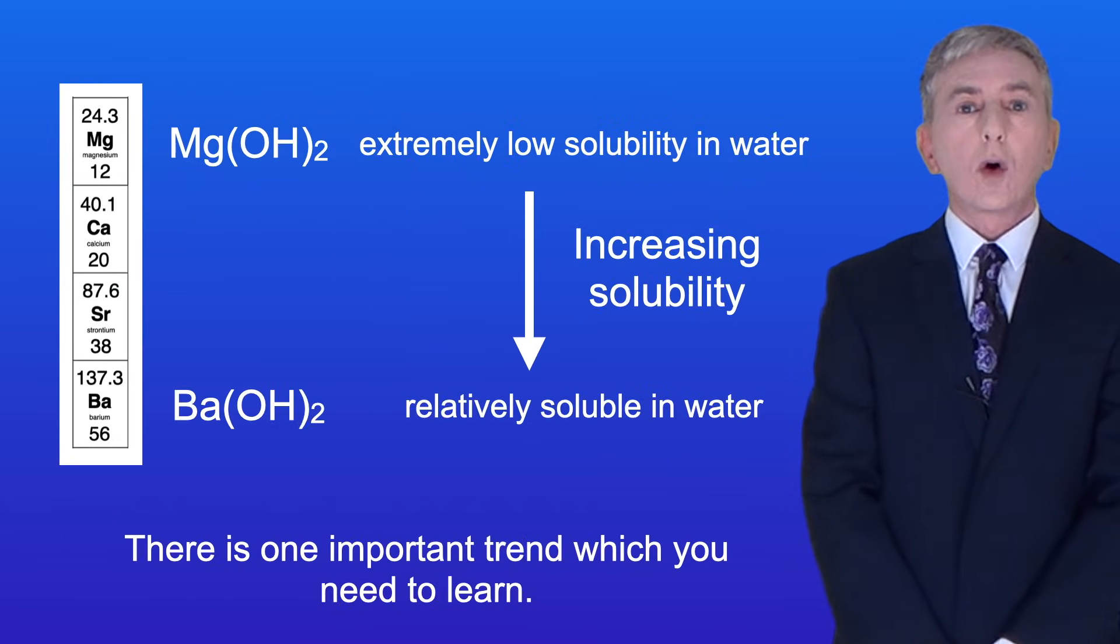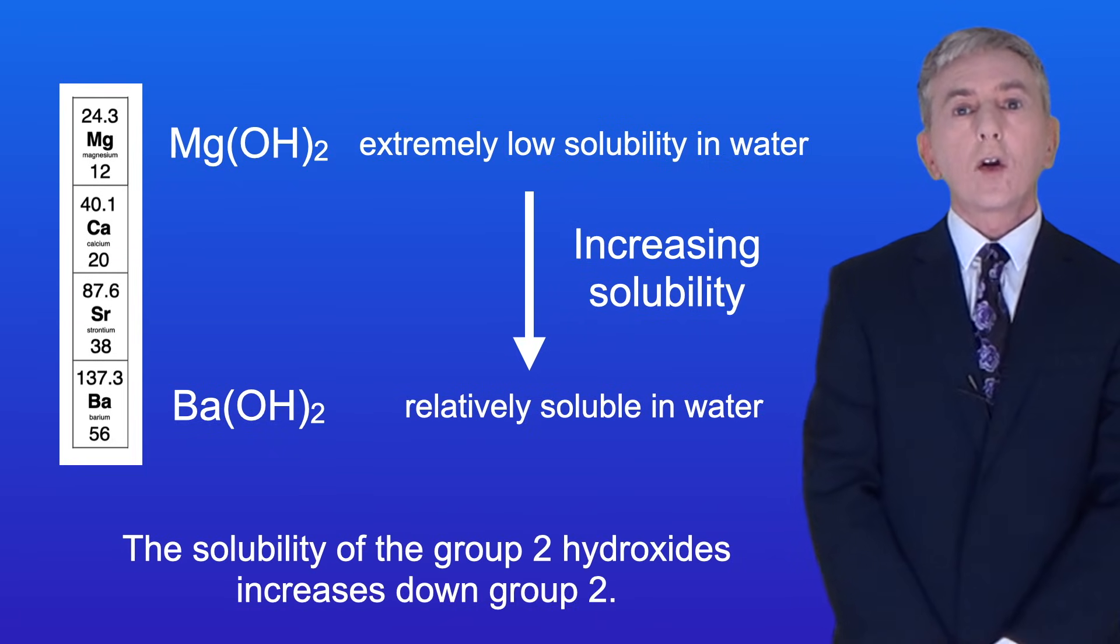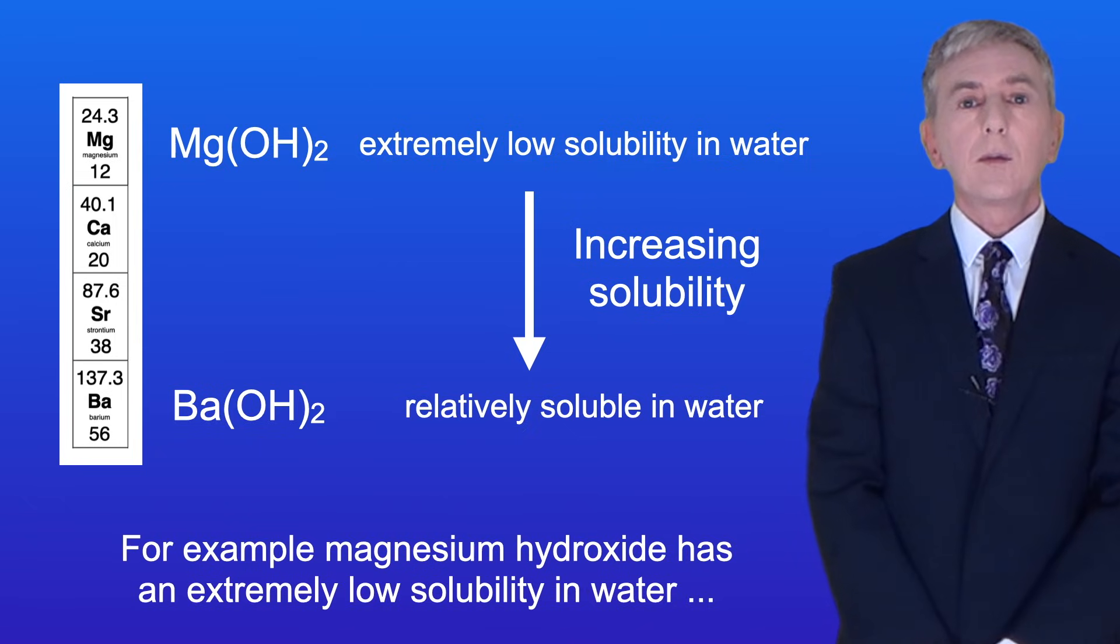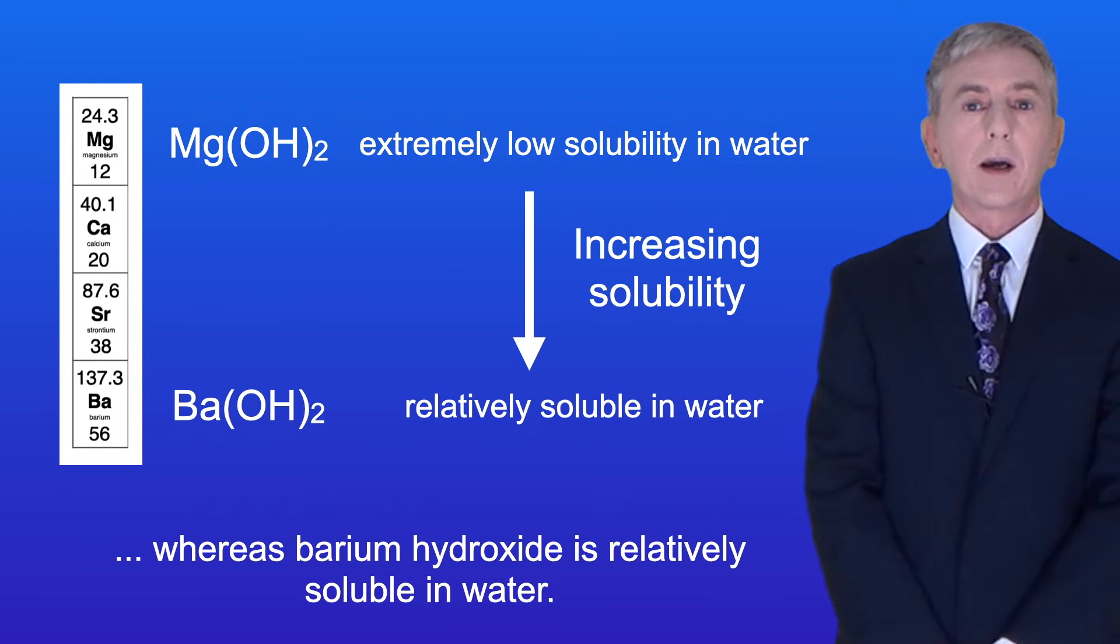Now there is one important trend which you need to learn. The solubility of the group 2 hydroxides increases down group 2. For example, magnesium hydroxide has an extremely low solubility in water, whereas barium hydroxide is relatively soluble in water.